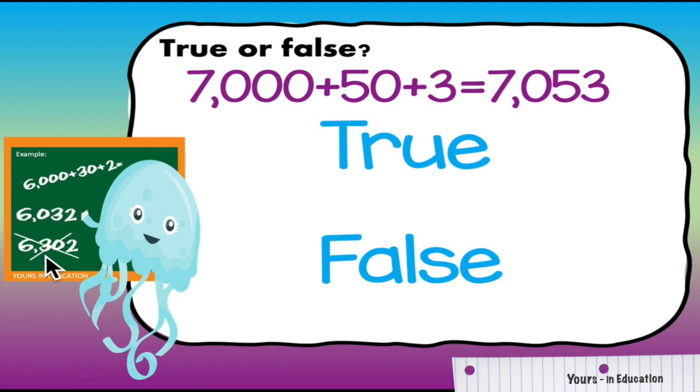On this number we have a 3 in the hundreds place which means that we will need to have a 300 somewhere and we don't. That's why the answer is 6,032.